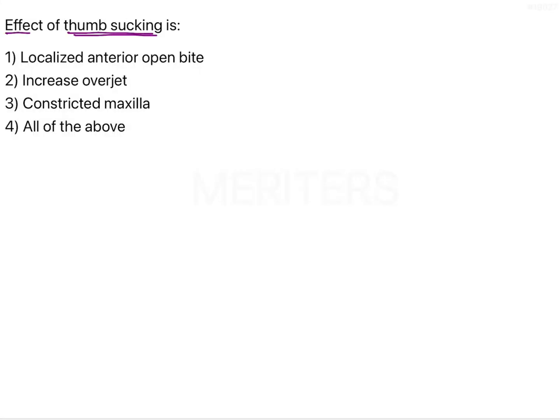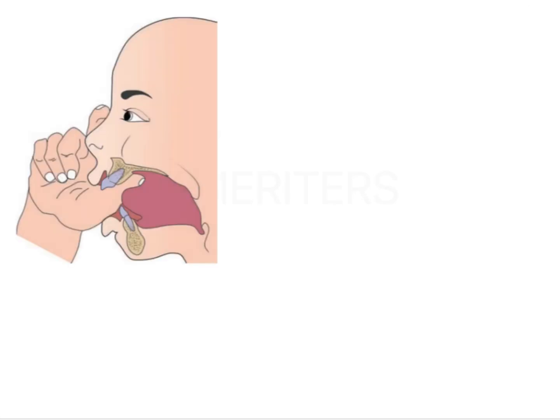The effects of thumb sucking include localized anterior open bite, increased overjet, constricted maxilla, or all of the above. In order to understand these effects, it is important to identify the forces which are involved with this habit.